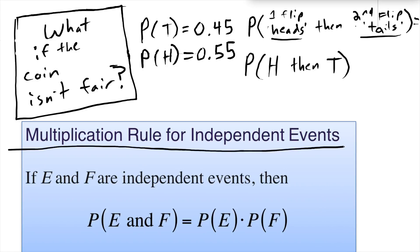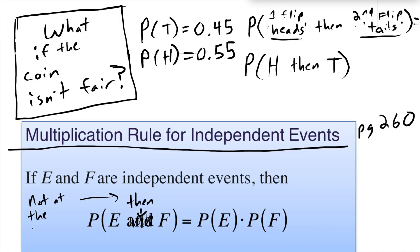To do that we're going to use what's called the multiplication rule. Here's something I want you to change in your book — unless you are renting it. I literally want you to take this rule, which appears on page 260, and mark out 'and' replacing it with 'then'. This is going to be the probability of E then F. This 'then' reminds us that these are not happening at the same time.